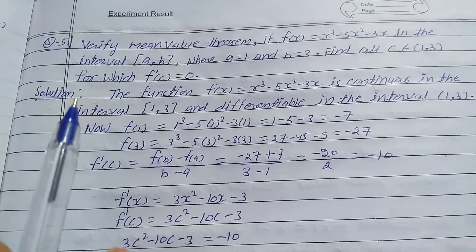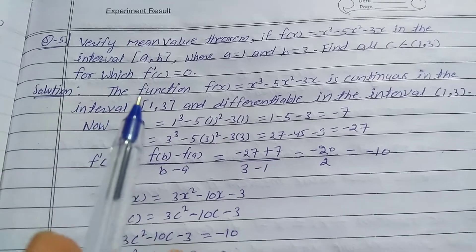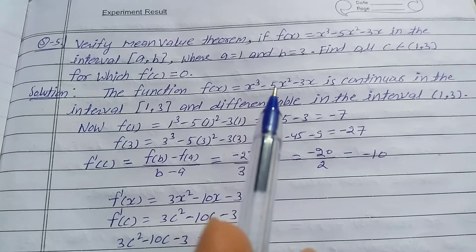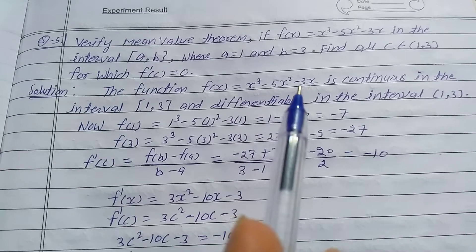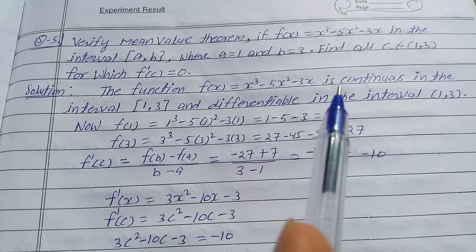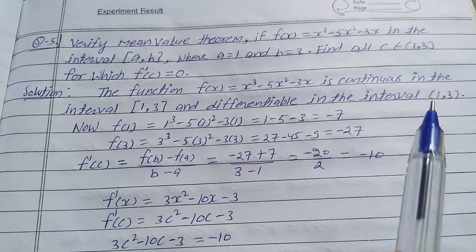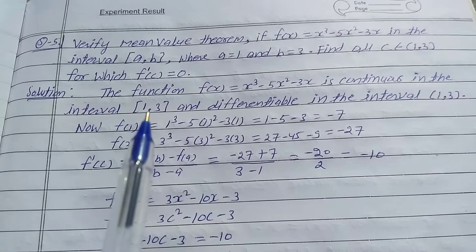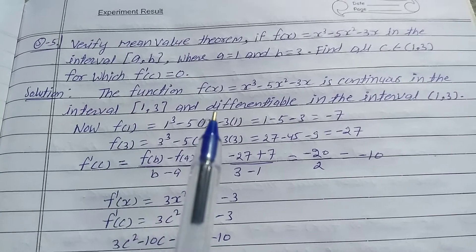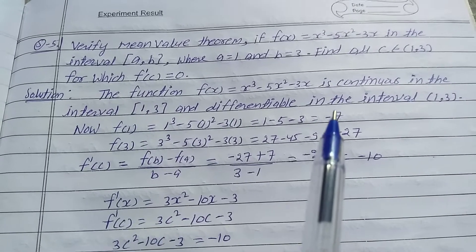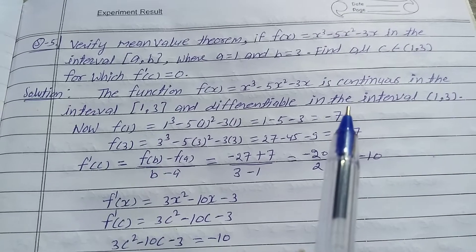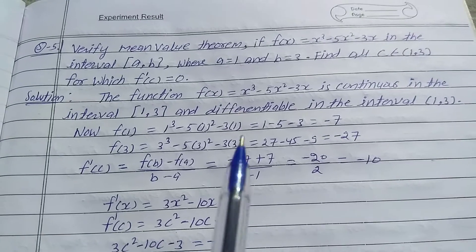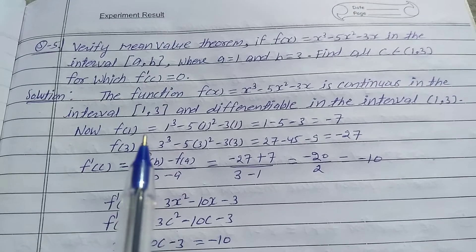So, the solution is that the function f(x) = x³ - 5x² - 3x is continuous in the closed interval [1, 3] and differentiable in the open interval (1, 3).